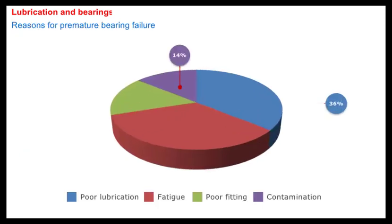SKF experience suggests that, generally speaking, about half of those premature failures are typically related with poor lubrication or contamination. These figures do vary from industry to industry.